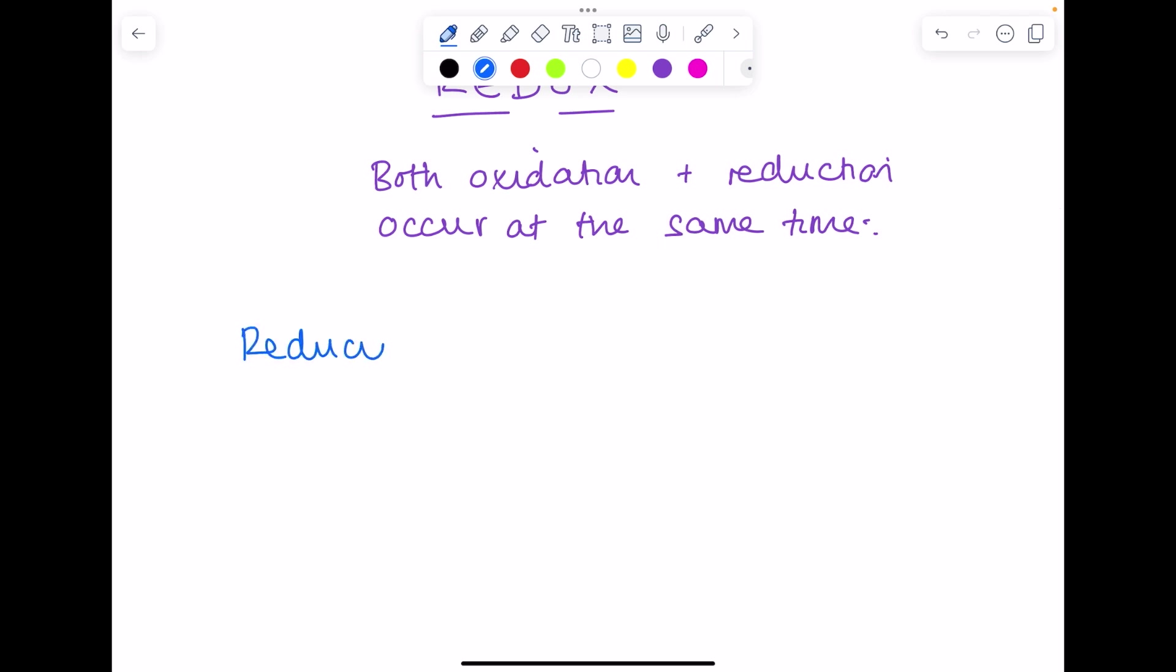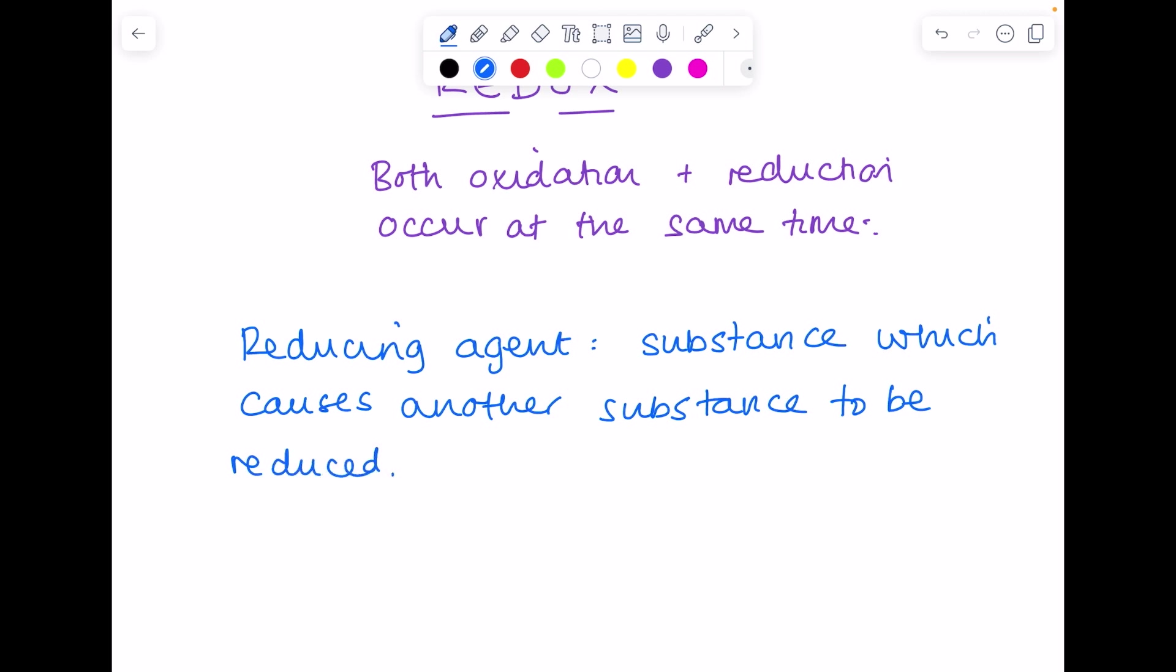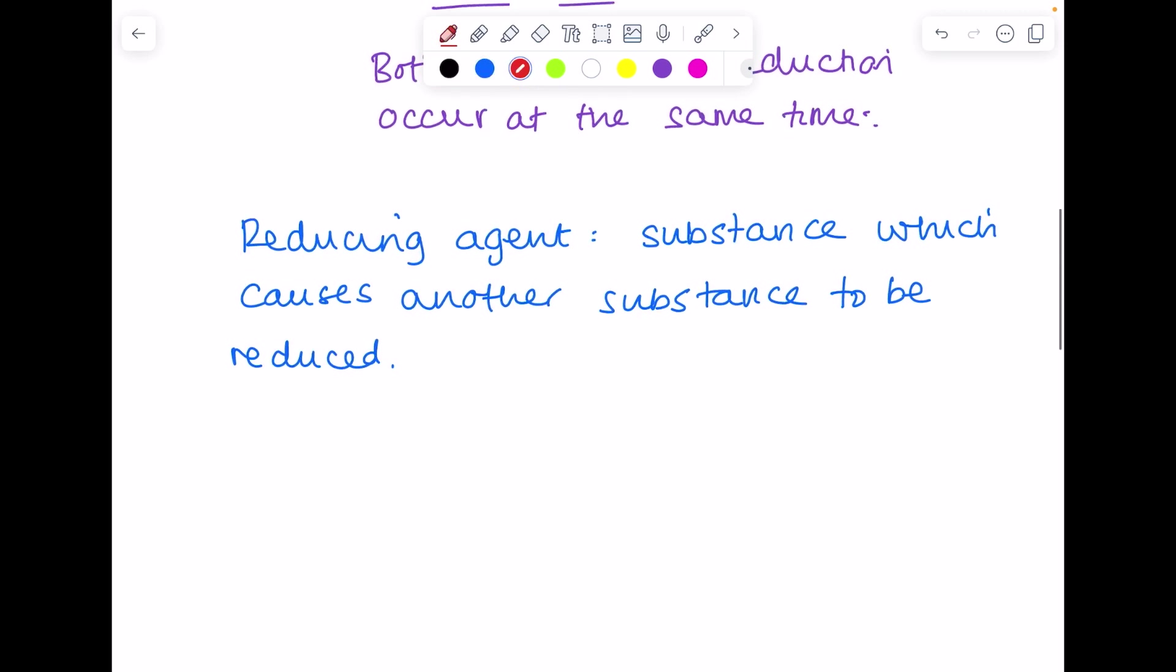A reducing agent is a substance which causes another substance to be reduced. So read that again. A reducing agent is a substance which causes another substance to be reduced, whereas an oxidizing agent is a substance which causes another substance to be oxidized.